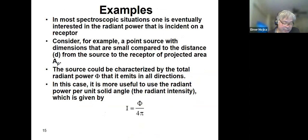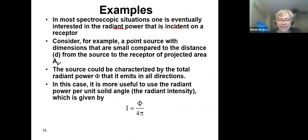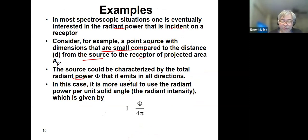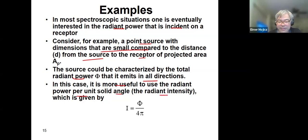In most spectroscopic situations, one is eventually interested in the radiant power that is incident on a receptor. Consider a point source with dimensions small compared to the distance from the source to the receptor. The source could be characterized by the total radiant power emitted in all directions. It is more useful to use the radiant power per unit solid angle — radiant intensity — given as I = Φ / 4π.